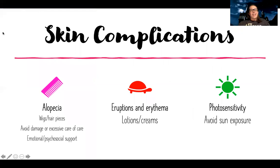There are also skin complications. Alopecia — hair loss — is probably one of the most common things people think of with cancer treatments. If they have really long hair, they can get it cut early or have their head shaved early and get fitted for a wig. If they want to keep their hair until it falls out, try to avoid damage or excessive care like overwashing.